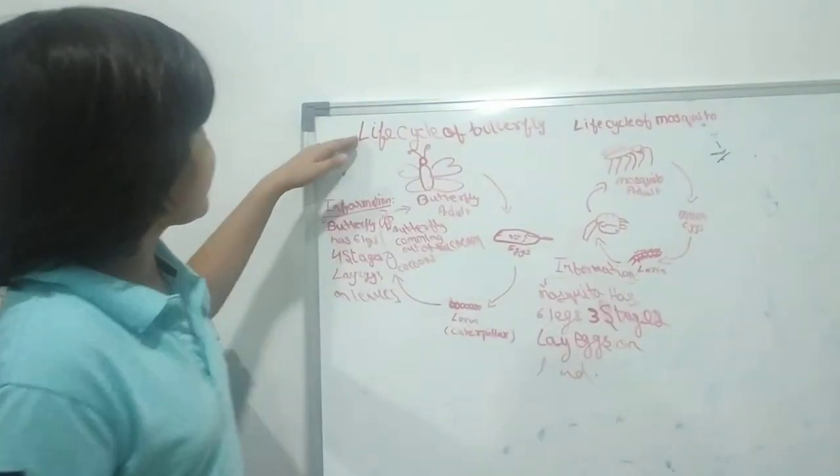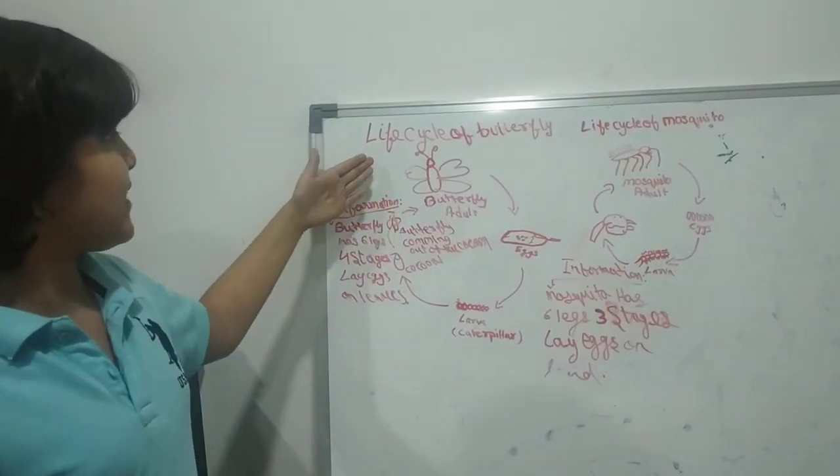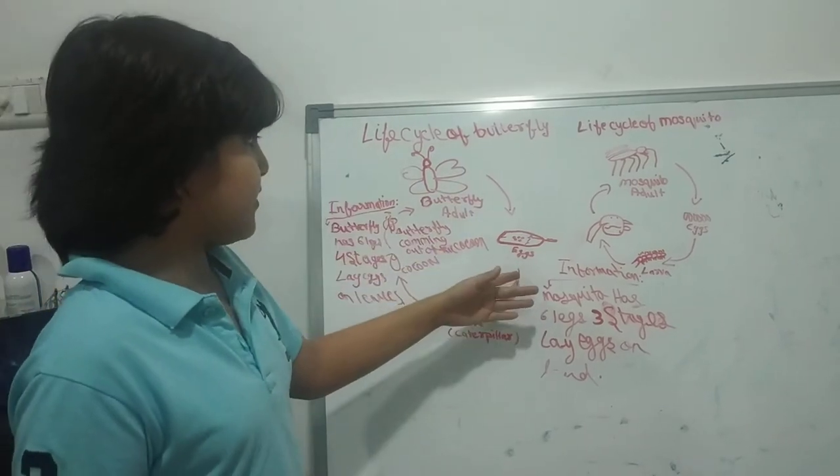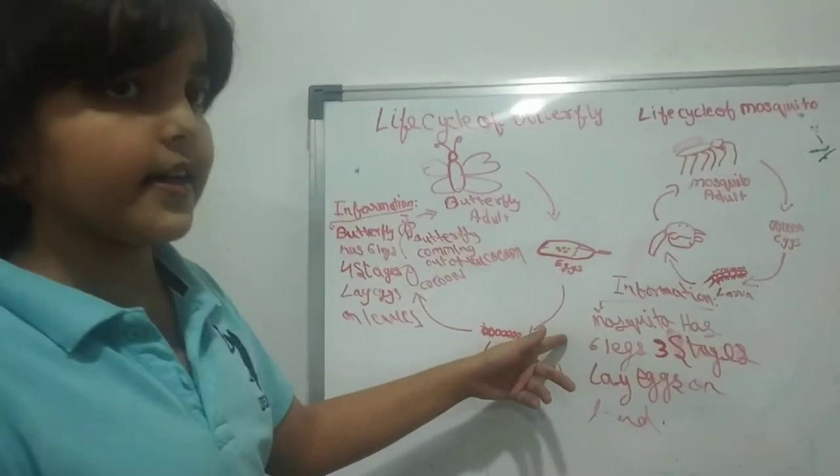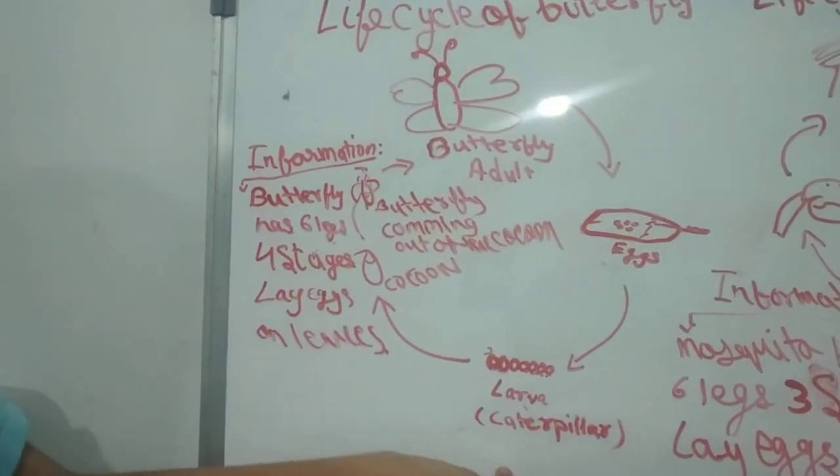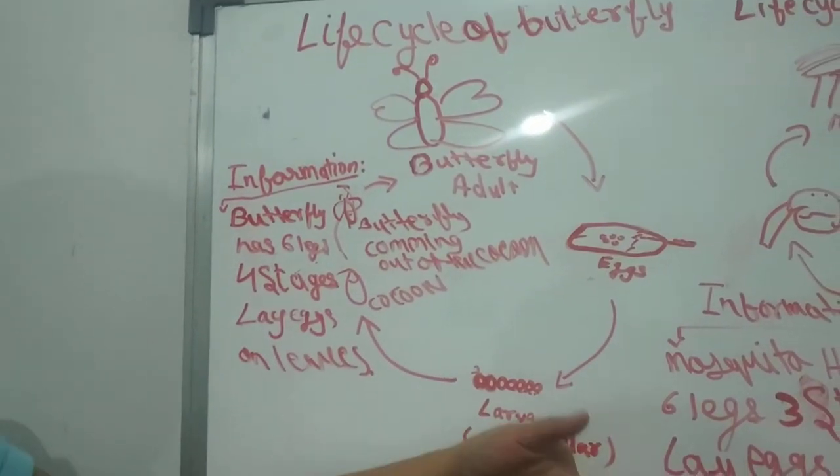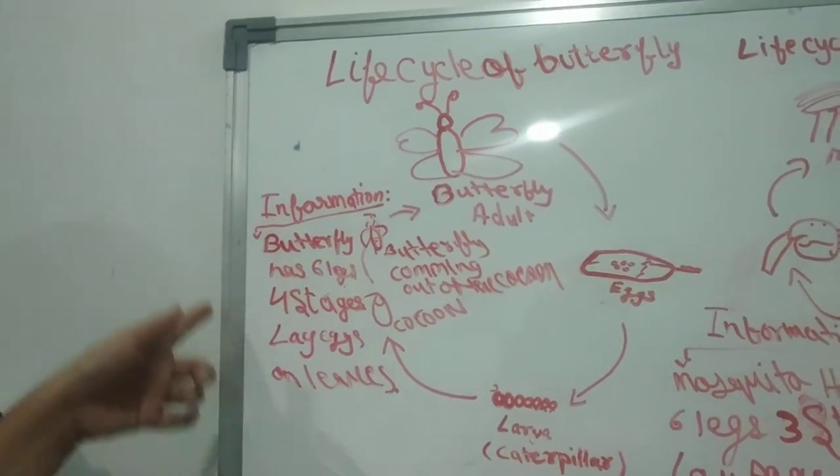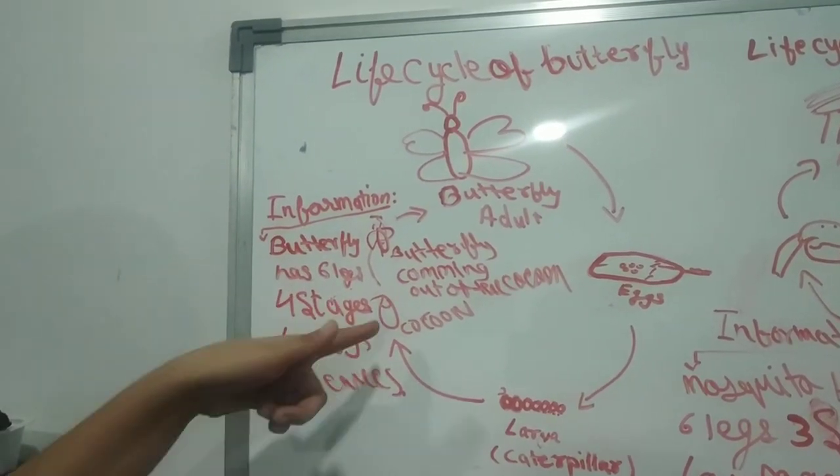Okay, the life cycle of butterfly is that a butterfly lays eggs and the eggs then grow up. They become a larva, known as caterpillar also. Then it becomes a cocoon.